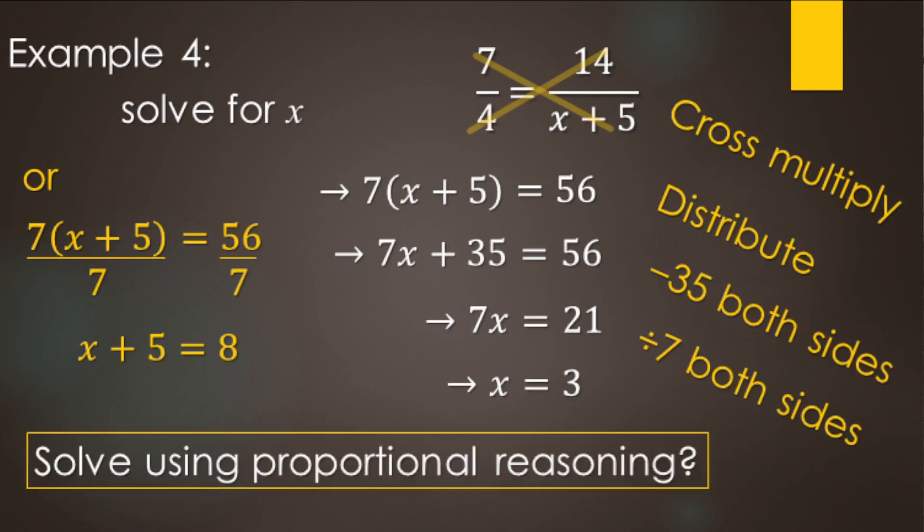Now, we can also use proportional reasoning on this one as well. So looking here, going from this ratio to this ratio, it's a multiply by 2. Check it out. We have 7 times what makes 14? Well, that's 7 times 2 makes 14. So multiply by 2. 4 times 2 is 8. And that's going to equal x plus 5. Well, here we go. 8 equals x plus 5. So we can go straight from here using proportional reasoning to this step right here. So again, this ratio times what equals this ratio? Well, it's a times 2 because I'm comparing these two numbers here.